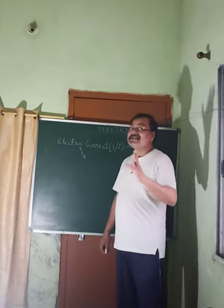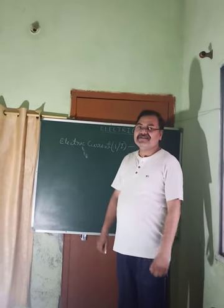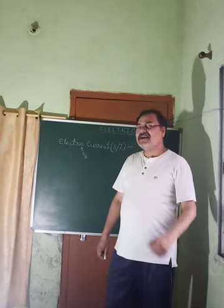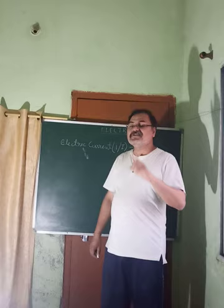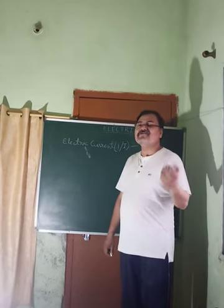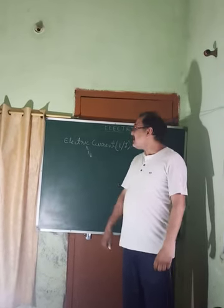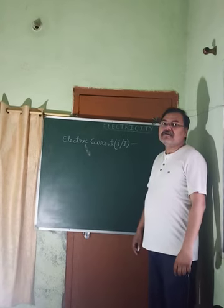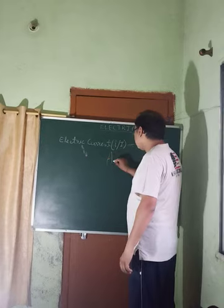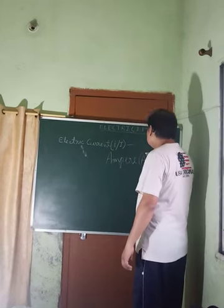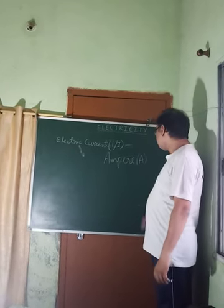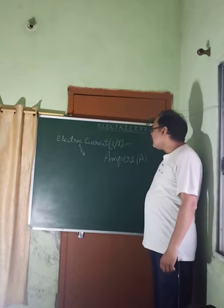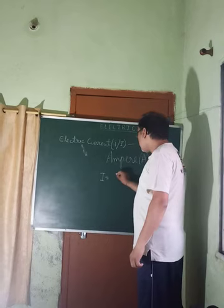The definition: the amount of charge flowing through a particular cross section of a conductor per unit time is called electric current. It is a scalar quantity — it has magnitude and direction both, but it does not follow the laws of vector algebra; it follows simple arithmetic rules. It is denoted by small i or capital I, and its unit is ampere, denoted by capital A, named after the scientist Ampere. It is given by I equals Q upon T, where Q is the charge and T is the time.